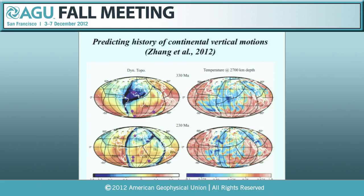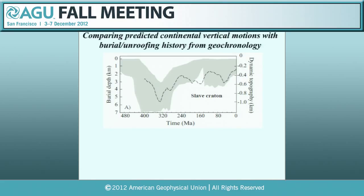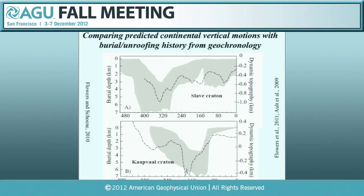We can do the same kind of analysis for the Kaapvaal Craton in South Africa, finding a similar good agreement between our model-predicted dynamic topography history and the observed ones. Next, I want to touch on our model's implications for the Earth's magnetic polarity reversals. The Earth's magnetic field reverses polarity frequently, but there are times called superchrons — like the Cretaceous superchron and the Kiaman superchron — when the polarity is very stable for tens of millions of years. From geodynamical studies we know that polarity reversals may be controlled by the core-mantle boundary heat flux.